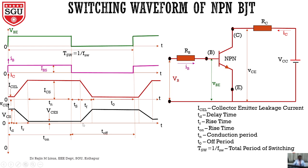During the fall time, the collector-emitter voltage will start to increase. Then the transistor remains in the off state until we give positive current to the base again. This period is called the off period T0. So the off time is nothing but storage time plus fall time plus the off period — totally we call it the off time.